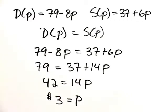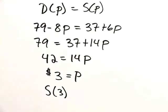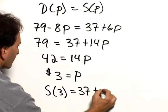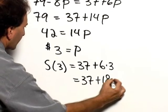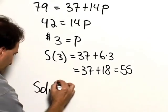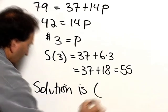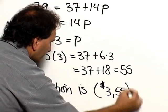Now we have to find the actual amount that's both supplied and demanded. It is the same because this is the equilibrium point, so you can use either formula. Let's take the supply formula. S(3) will equal 37 plus 6 times 3, that's 37 plus 18, which is 55. That's 55 units that would be supplied. So the solution is the point represented by $3, 55 units.